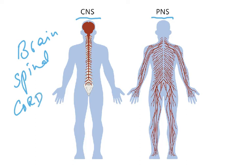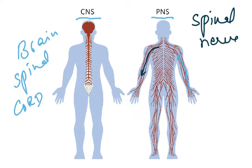Peripheral means periphery — to the outside. The peripheral nervous system consists of the nerves bringing impulses to the spinal cord and those taking impulses away from it. These are called sensory nerves and motor nerves respectively. The peripheral nervous system is made up of spinal nerves of two types: those carrying impulses to the spinal cord (sensory) and those carrying impulses away (motor).